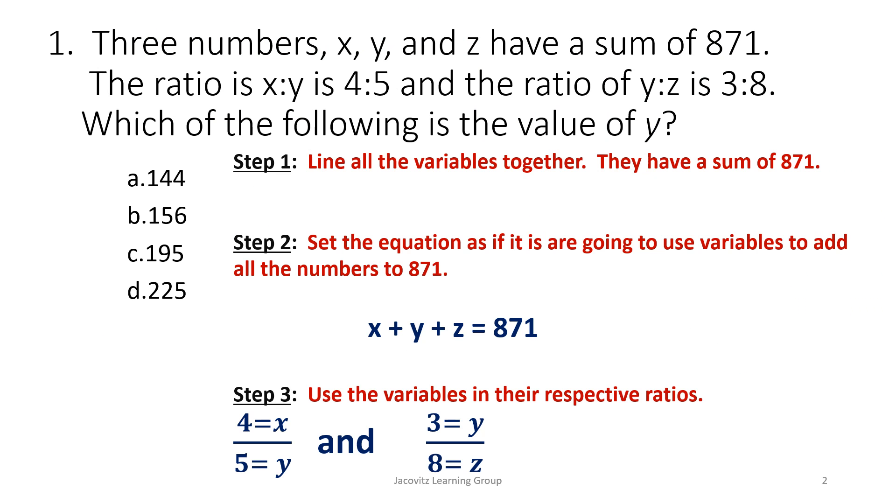Okay, so three numbers, x, y, and z, have a sum of 871. The ratio is 4 to 5 for x and y, and the ratio of y and z is 3 to 8, which of the following is a value of y.